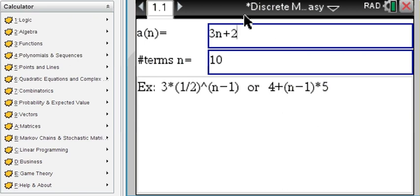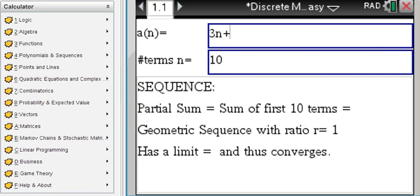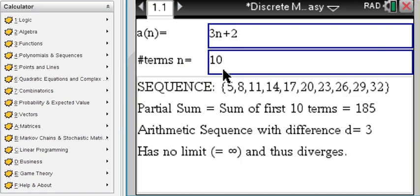explicit sequence formula right here in terms of n, 3n plus 2. Say we want to have 10 terms, those 10 terms are displayed here, the sum of those 10 terms is 185. If you change that to 11 terms you get 220 and this appears to be an